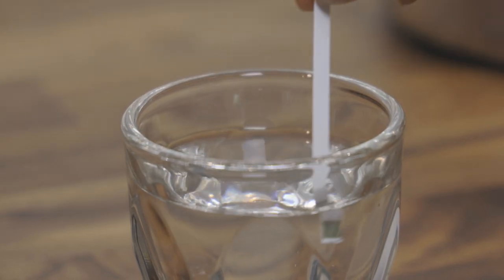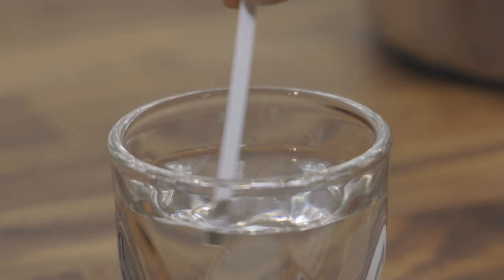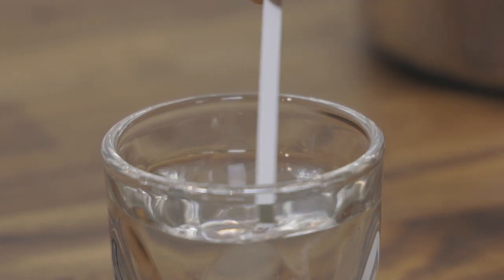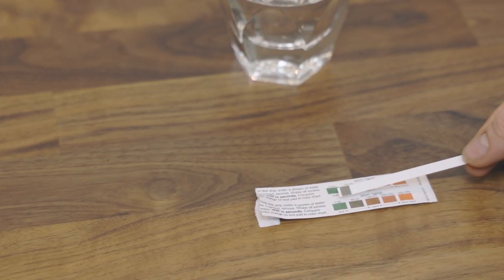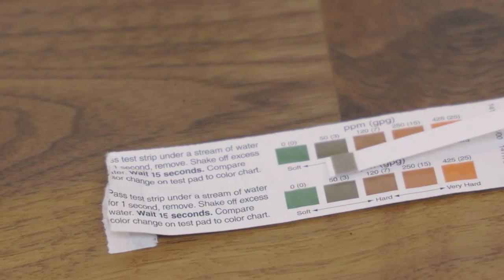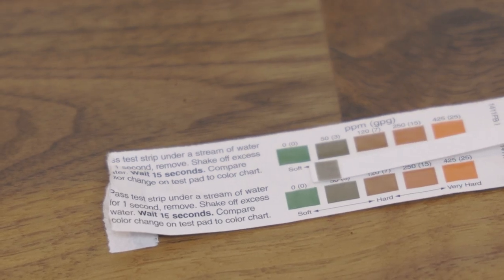Before introducing water to your machine, it's essential to test it to ensure it's adequately soft to avoid scale buildup. Use the included water test strips from your home barista starter kit to verify the hardness of your water. You're looking for softness around 50 parts per million.